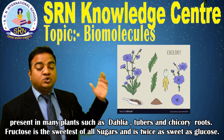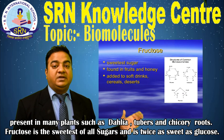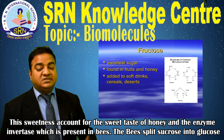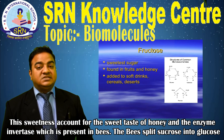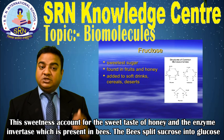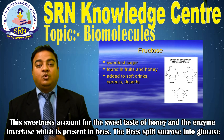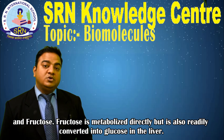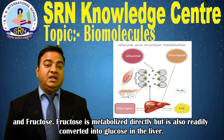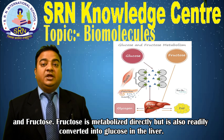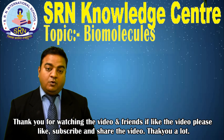Fructose is the sweetest of all sugars and is twice as sweet as glucose. This sweetness accounts for the sweet taste of honey. The enzyme invertase, present in bees, splits sucrose into glucose and fructose. Fructose is metabolized directly but is also readily converted into glucose in the liver.